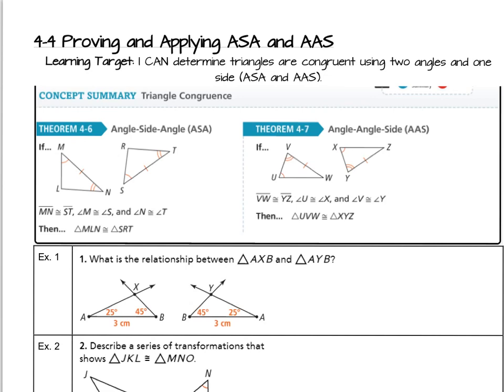Lesson 4.4, Proving and Applying ASA and AAS. In this lesson, we're going to learn two unique new types of groupings to prove triangles congruent. Just like SAS and SSS, it's important to note the location.